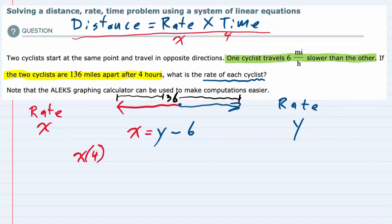So for example, if he were going 10 miles per hour, he would have gone 40 miles in 4 hours.